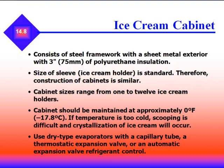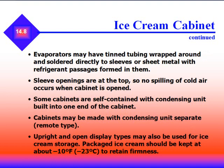Ice cream cabinets, as found in convenience stores, consist of a steel framework with sheet metal exterior and 3 inches of polyurethane insulation. Cabinets range from one to twelve ice cream holders and should be maintained at approximately zero degrees. If the temperature is too cold, scooping is difficult and crystallization of ice will occur. They use a dry type evaporator with capillary tube, thermostatic expansion valve, or automatic expansion valve. Sleeve openings are on top so no spilling of cold air occurs when the cabinet is opened. Some cabinets are self-contained; others use remote condensing units. Packaged ice cream should be kept at about negative 10°F to retain firmness.